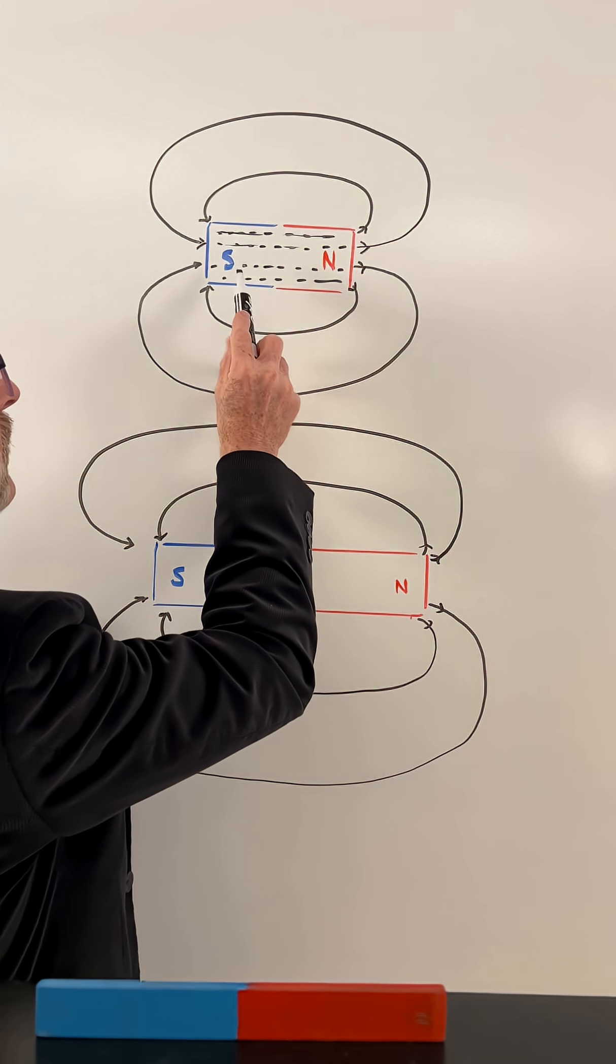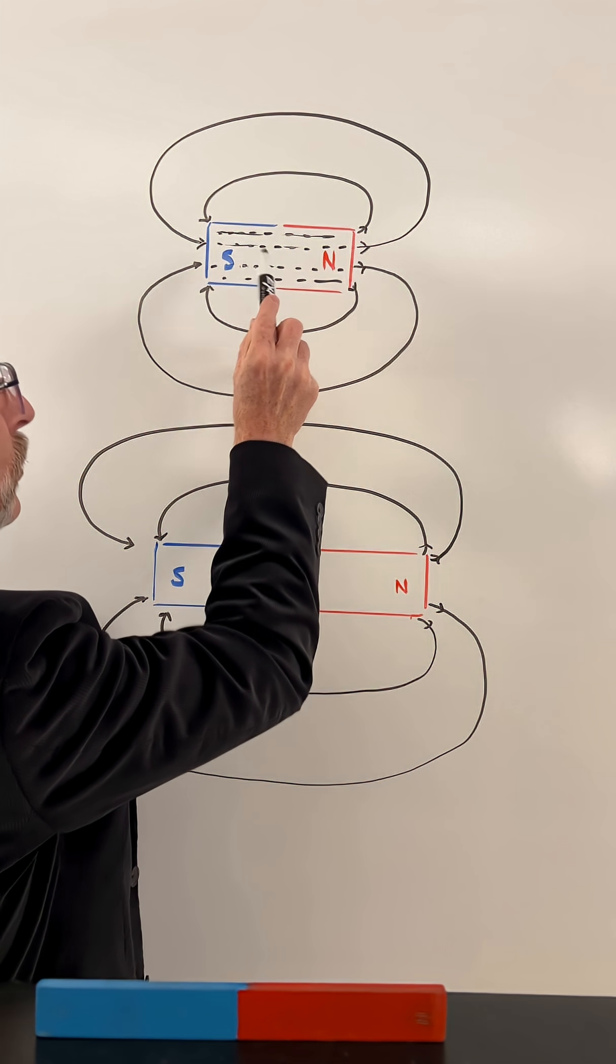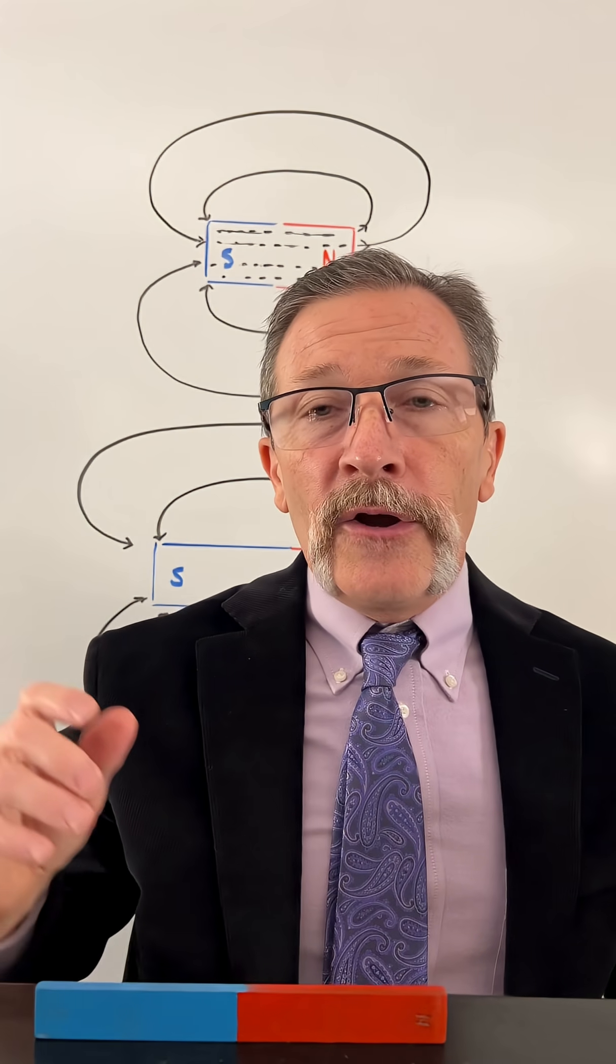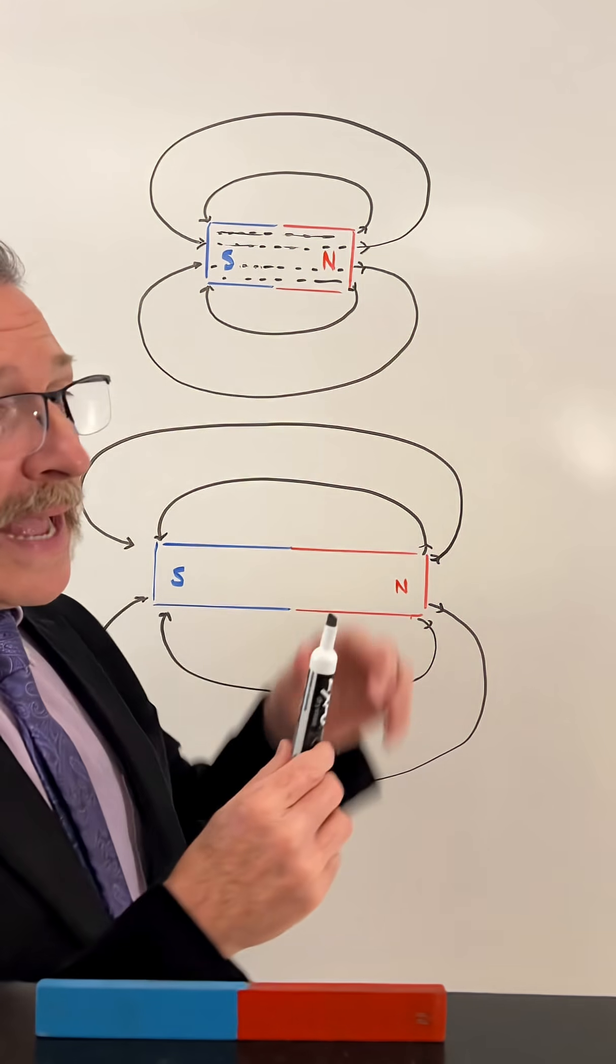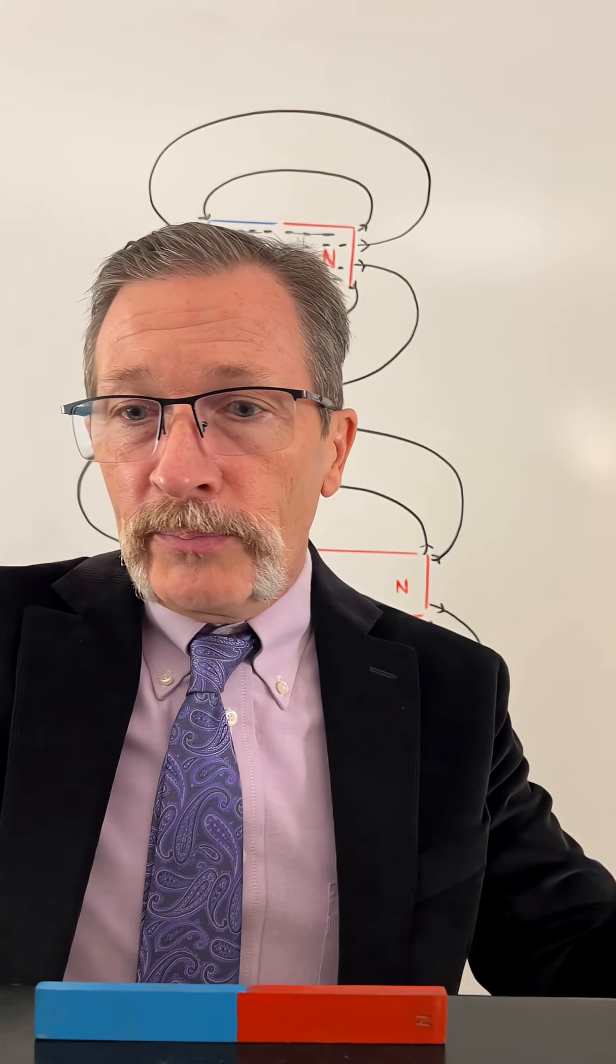You can think of each one of them as being like a south, north, south, north, south, north. And that also explains why we don't really see magnetism at the central part of a magnet.